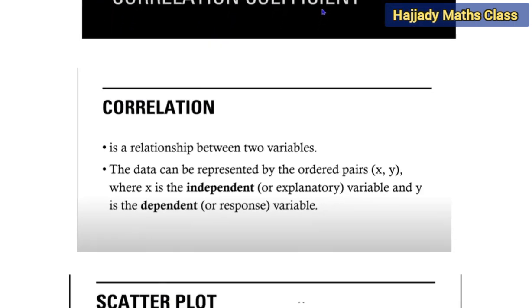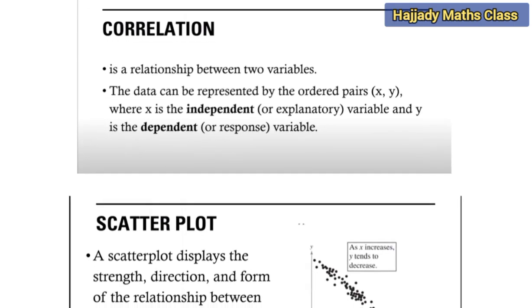When we talk about the word correlation, this is a relationship between two variables and the data can be represented by the ordered pair x and y, where x is the independent or explanatory variable and y is the dependent or response variable.